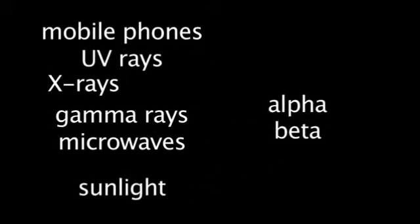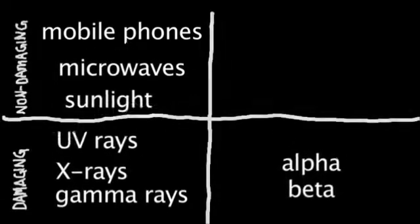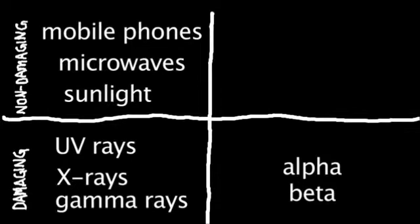Another very important distinction is between the radiation that can do damage to molecules like DNA and radiation that can't. So let's rearrange the radiation into these groups. The damaging radiation includes UV rays, X-rays, gamma rays, and alpha and beta particles.